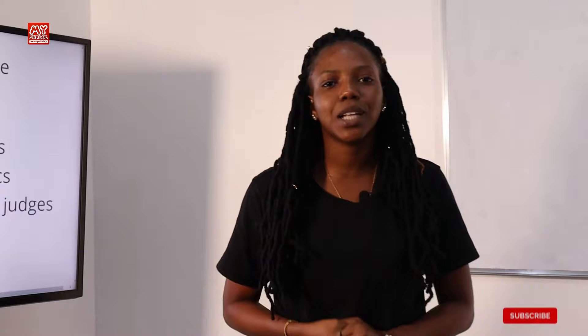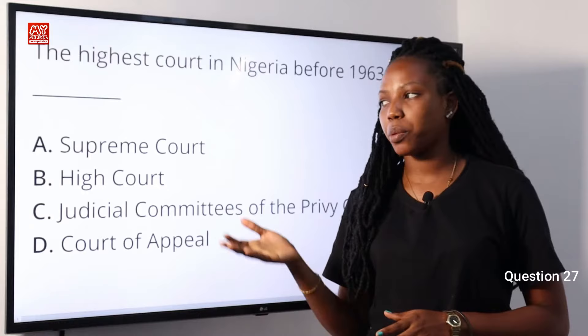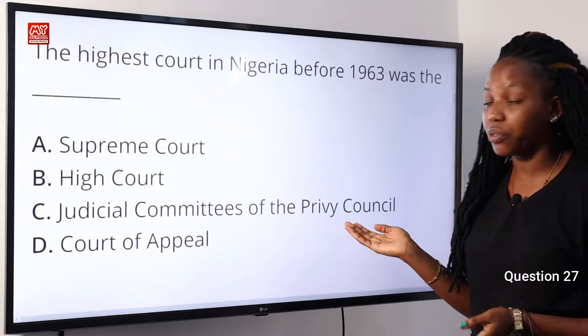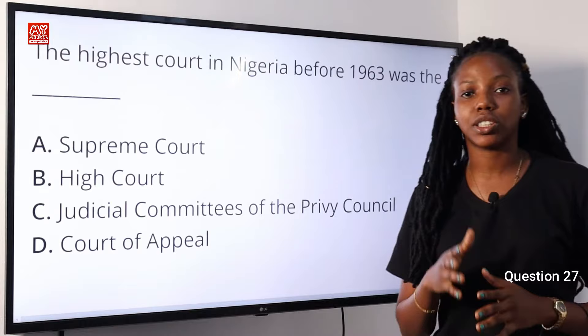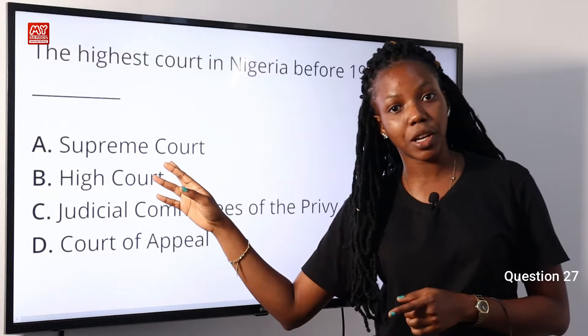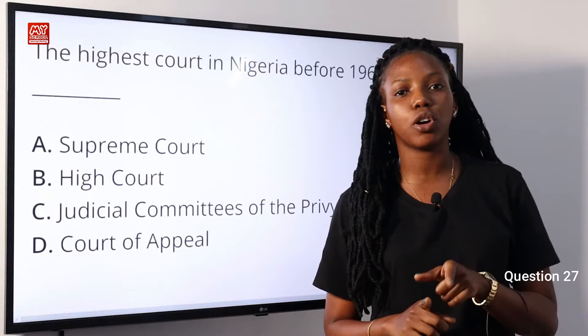Question 27. The highest court in Nigeria before 1963 was the dash. Do not forget that Nigeria was a British territory. The Judicial Committee of the Privy Council was established on the 13th of August 1833 — way before 1963. The Supreme Court was established on the 1st of October 1963, and the Court of Appeal was established in 1990. So the answer is C, Judicial Committee of the Privy Council. Option C is the correct answer.